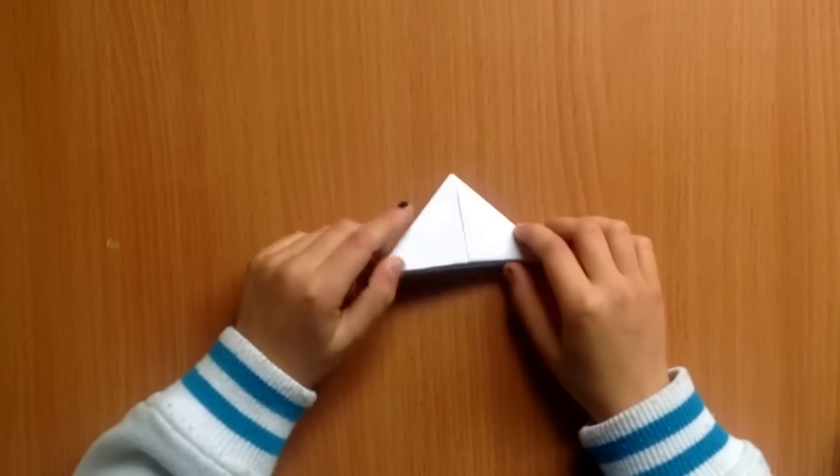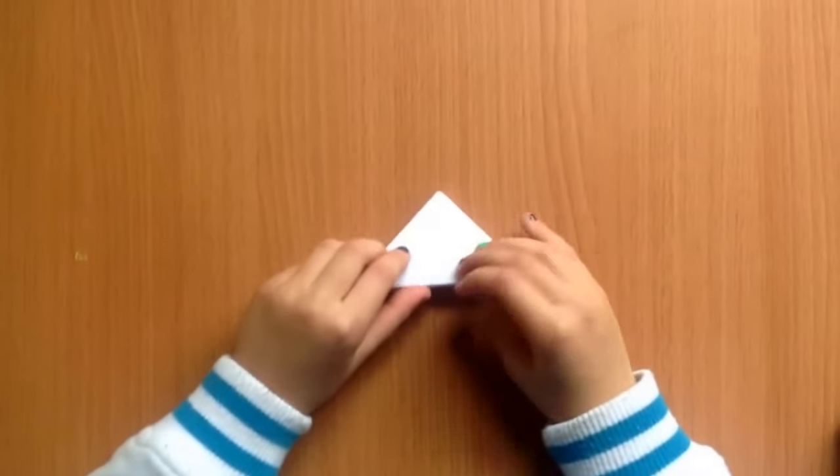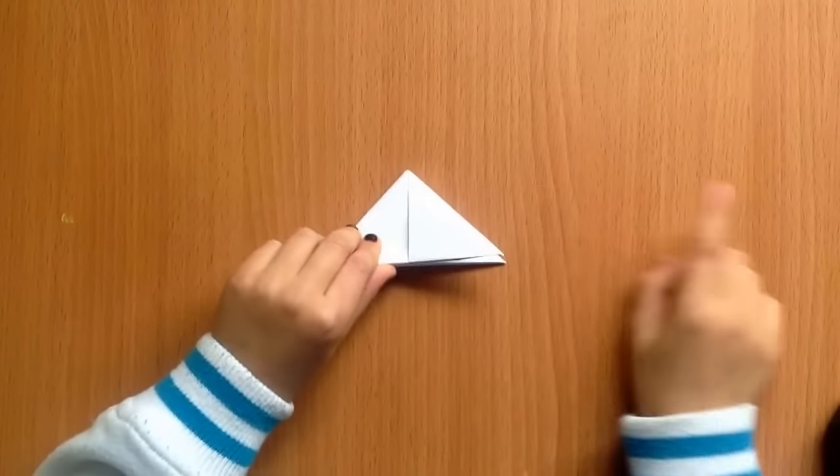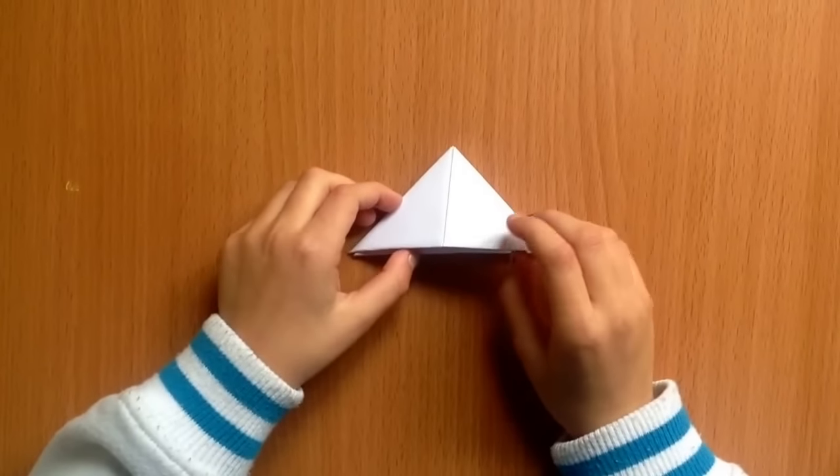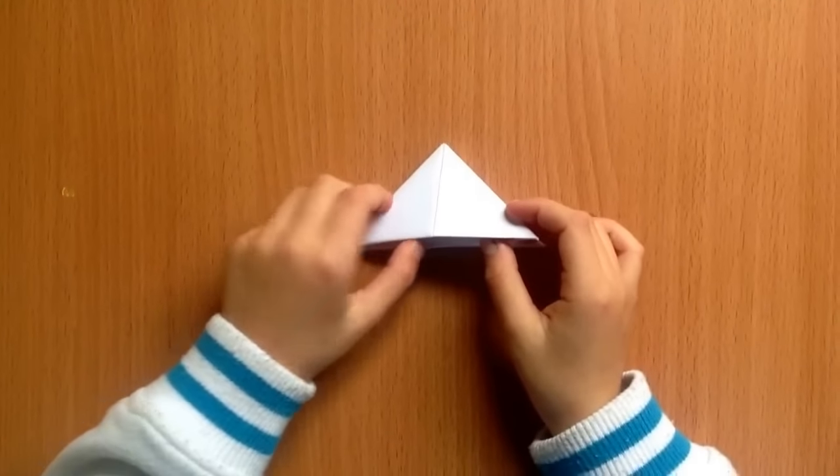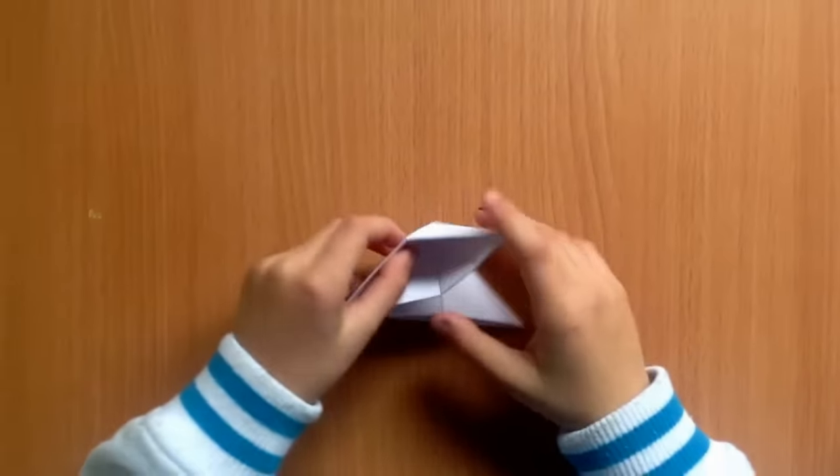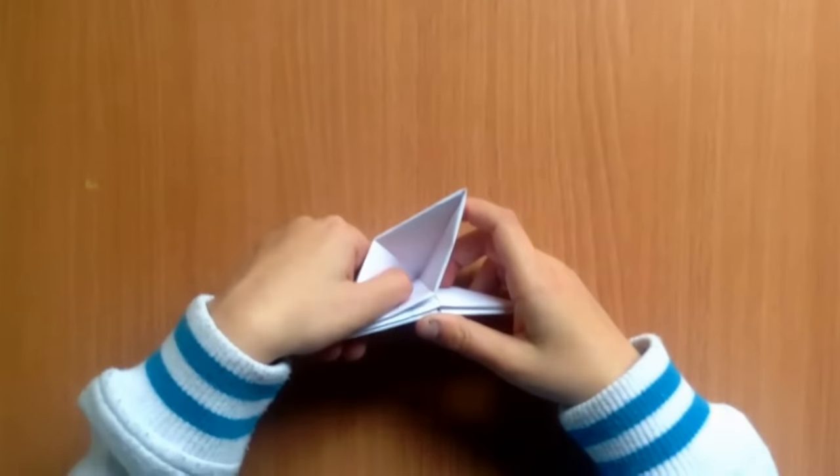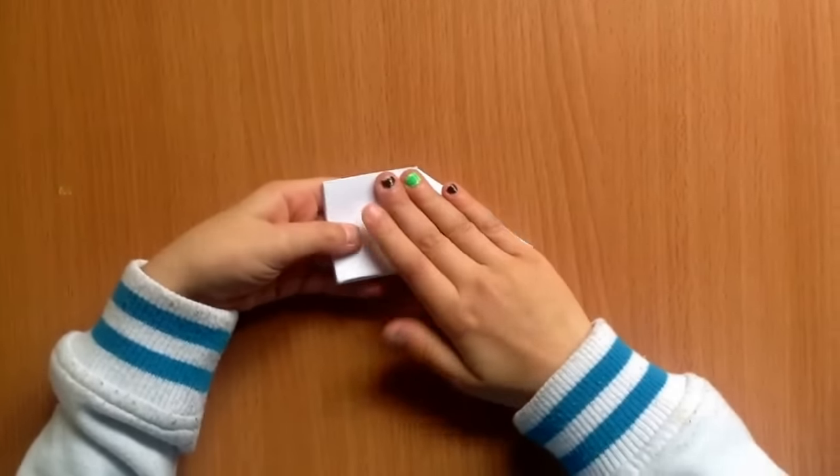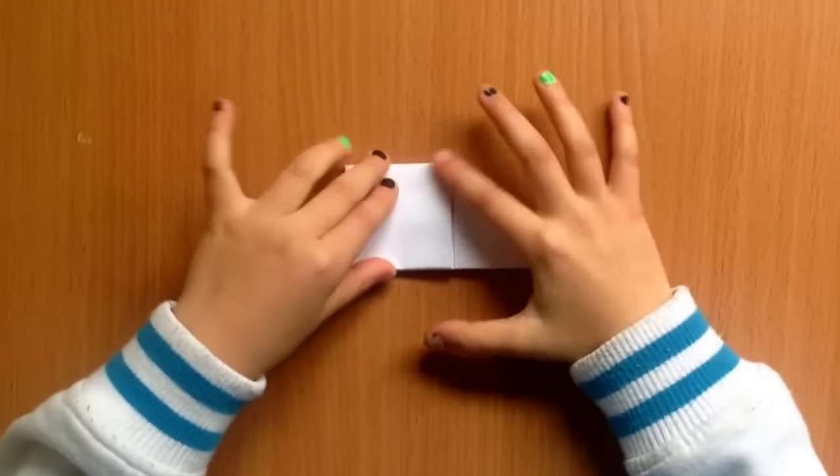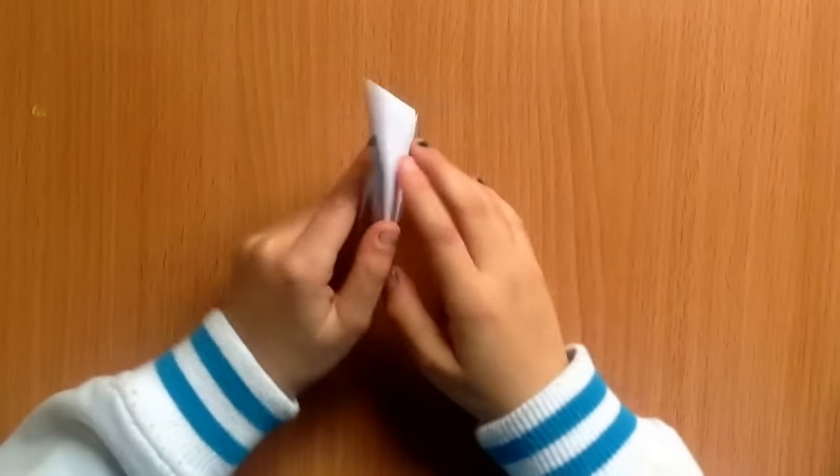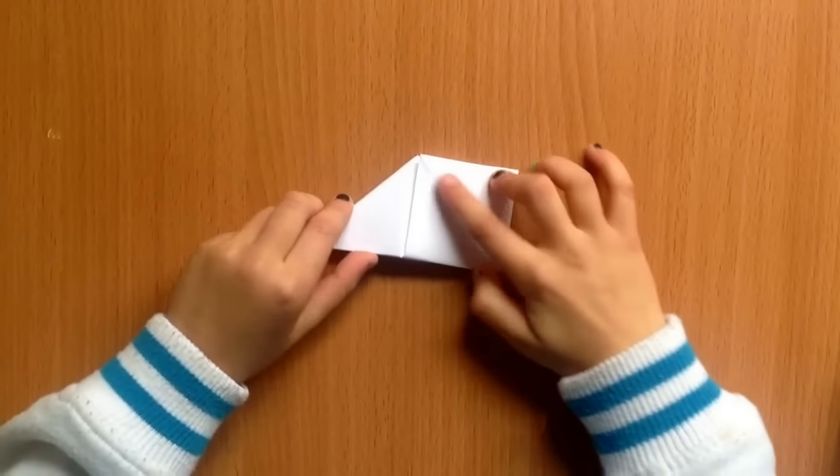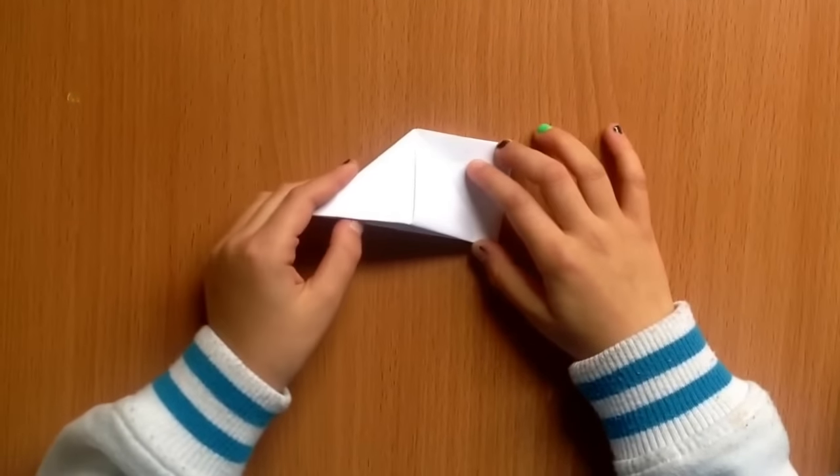Step 5. Now flip your triangle over so the open side is on the right hand side. In the middle of the first triangle you should see a little slit that you can slide your thumb in and push the top down so you'll have a square and a triangle next to it. Now flip that over and do the same thing on the opposite side.